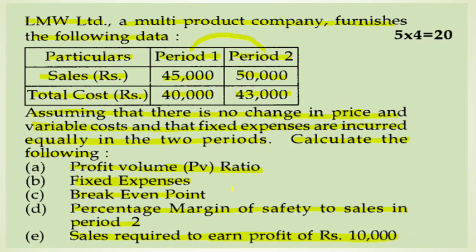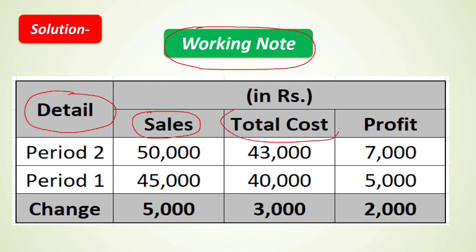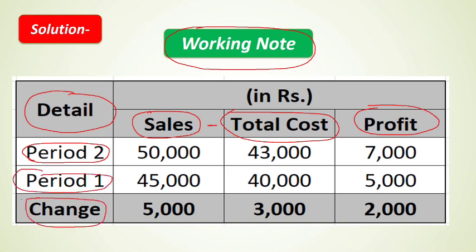Let's start by making a working note. The columns are: Period, Sales, Total Cost, and Profit. Sales for Period 2 is ₹50,000 and for Period 1 is ₹45,000 — giving a change of ₹5,000. Total cost for Period 2 is ₹43,000 and for Period 1 is ₹40,000 — a change of ₹3,000.